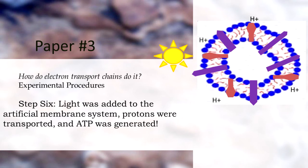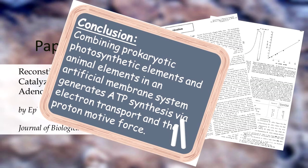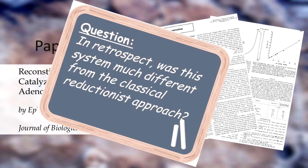ATP was generated by combining photosynthetic components and animal components in an artificial membrane system. These scientists were able to generate ATP via the proton motive force in the absence of any metabolism. In retrospect, was this system much different from the classical reductionist approach used by scientists prior to Mitchell?